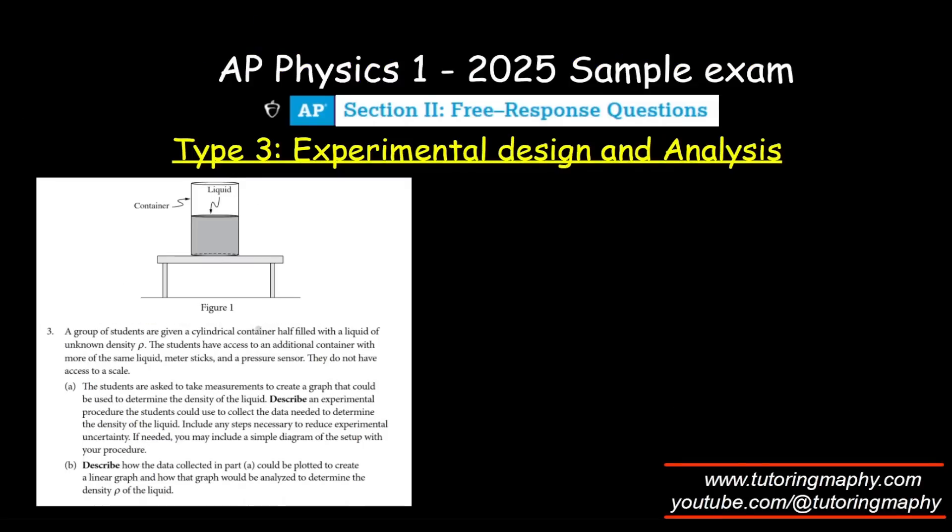So it is half-full, and there is an unknown density. We have more liquid, meter stick, and a pressure sensor. I'm going to use the equation of the absolute pressure. Absolute pressure equals atmospheric pressure plus the gauge pressure Pg. Atmospheric pressure is a constant value: 10^5 Pascals. Pg is given by ρgh. This is what I need to find. ρ is the unknown, g is a constant, and h can be measured.